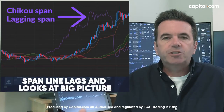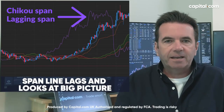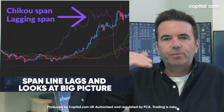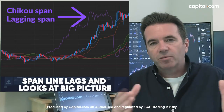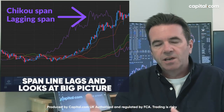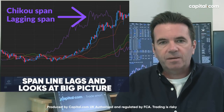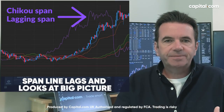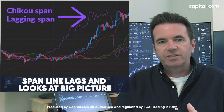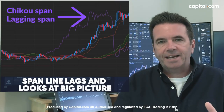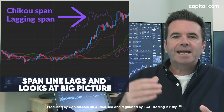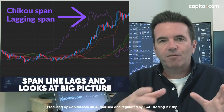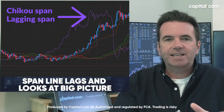Then we have the span line, which is a lagging line. This is probably looking at the big picture of the trend. Above where the price is trading now, the market's got a bullish bias; below, the market's got a bearish bias. It's the evolution of the current price in relation to the historical price, and it's a lagging indicator — plotted effectively 26 candlesticks ahead of where it's actually calculated.